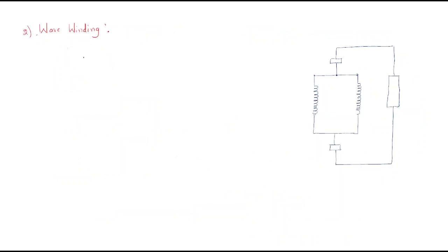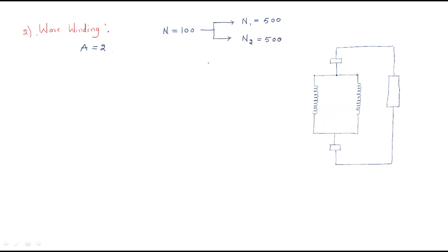In wave winding, the number of parallel paths is always 2. So the total number of turns is divided into 2 parts. With 100 turns total and two parallel paths, each parallel path has 50 turns equally divided.